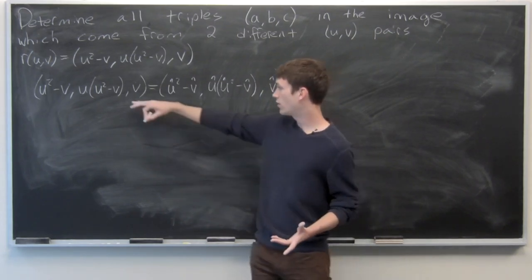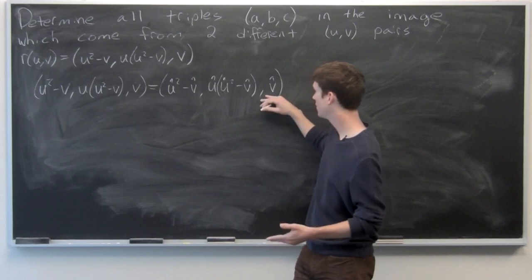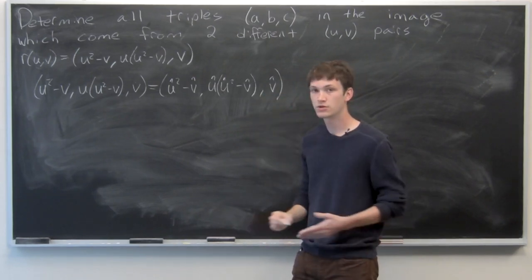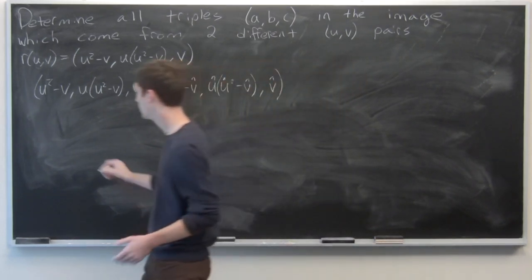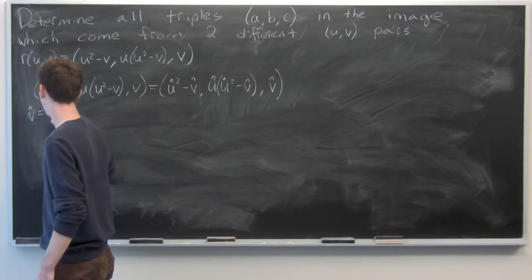Looking right away, you can see that the third component is v equals v-hat. So there's nothing we can do there. We know that v-hat has to equal v.